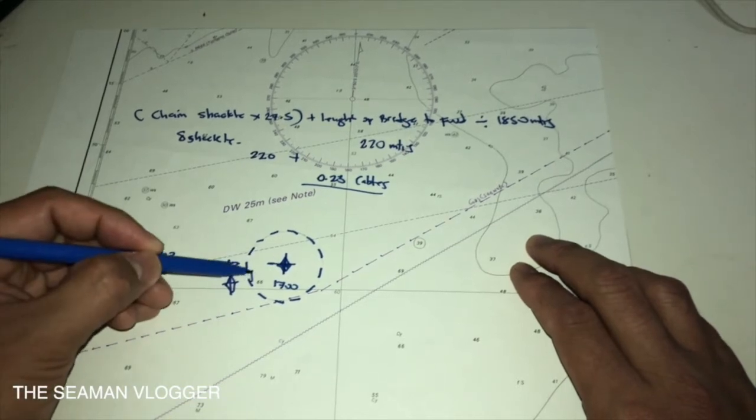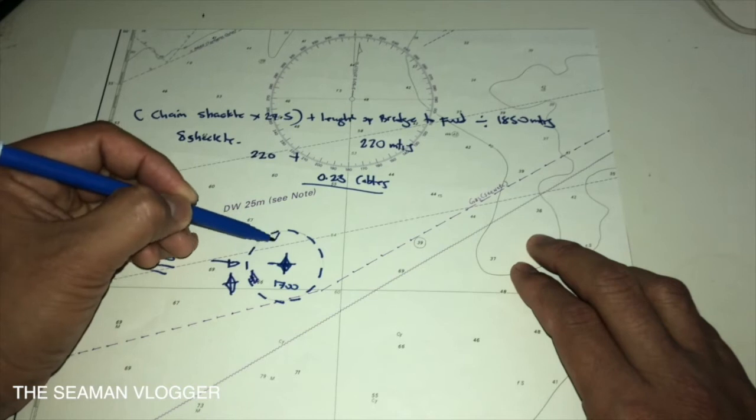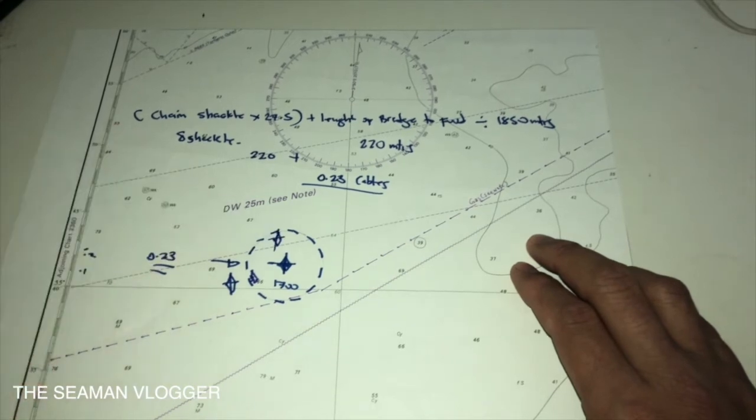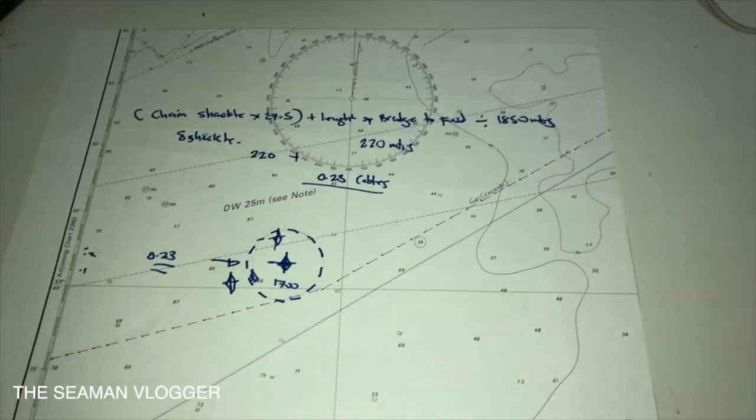So, your position must be always inside of the circle because that's your maximum stretch of the chain or your anchor chain. So, that's it. I already completed the calculation.